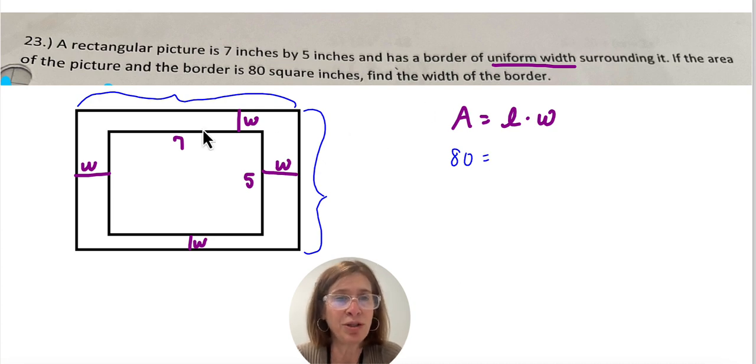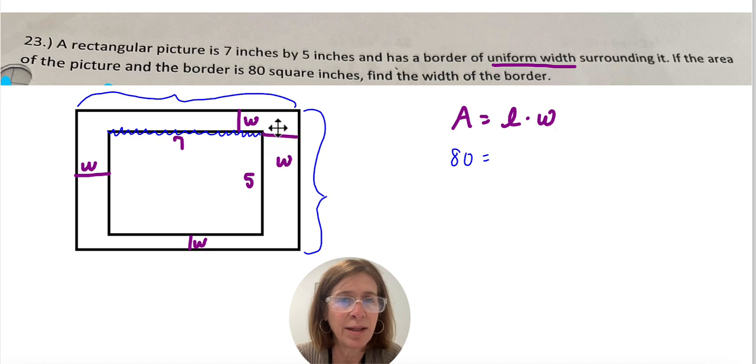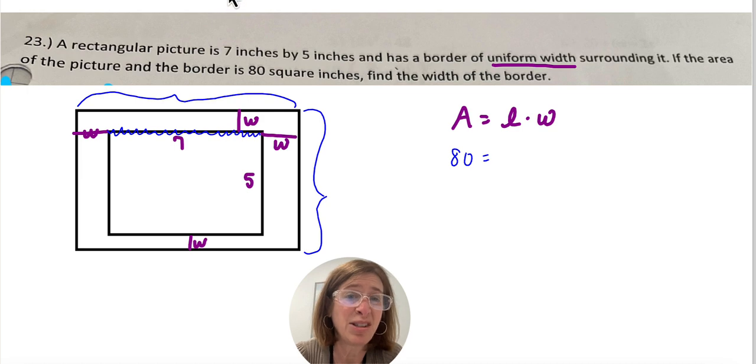So in this case what you have to do is you have to write the length and the width of the larger rectangle in terms of W. So if I know that this piece right here is 7, and then I know that this is W here right across, like this piece here is W. And this piece here is also W, then the length would be 7 plus 2W.